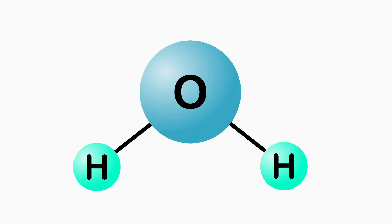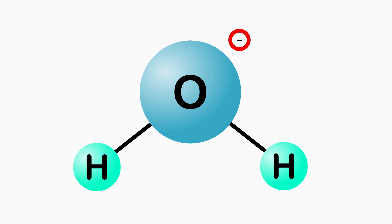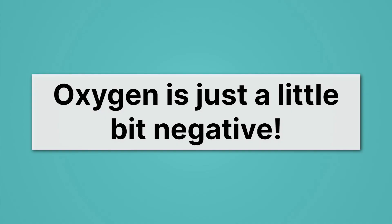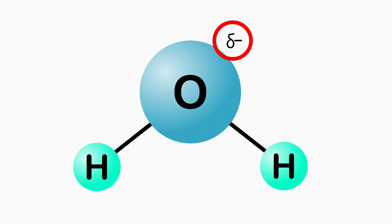It turns out it has everything to do with the molecules. With water, oxygen turns out to be negatively charged — not a full extra electron, but electrons are negative, so to say oxygen is negatively charged means there are some extra electrons over there. We use this Greek letter delta to indicate that oxygen is just a little bit negative — not quite fully negative one, just a little bit of extra electron density hanging out over there.